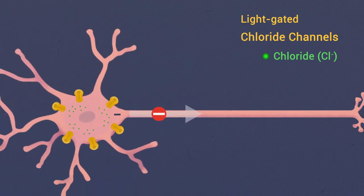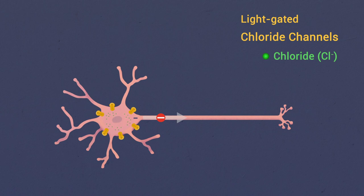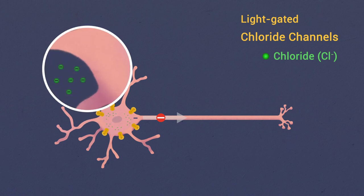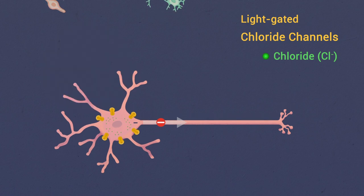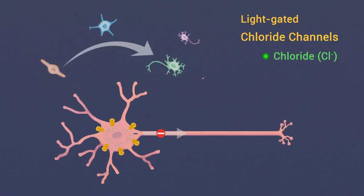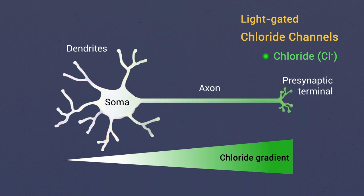Although these channels are emerging as promising optogenetic tools for inhibition of neuronal activity, their effects depend on the transmembrane chloride electrochemical gradient and may be complex due to the heterogeneity of this gradient in different developmental stages, neuronal types, and subcellular compartments.